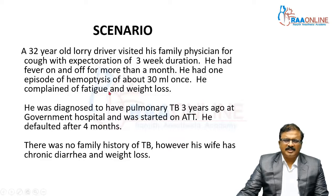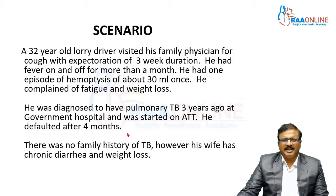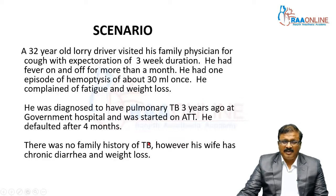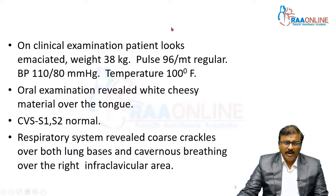The scenario involves a past history of tuberculosis — a defaulter who took ATT and stopped after four months of therapy. Now he has hemoptysis, fever, and productive cough with significant weight loss. His wife is also having chronic diarrhea and weight loss.